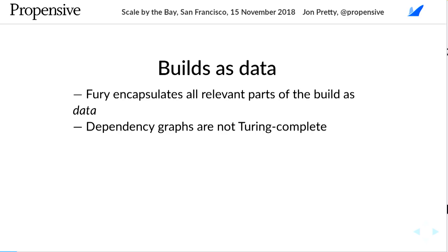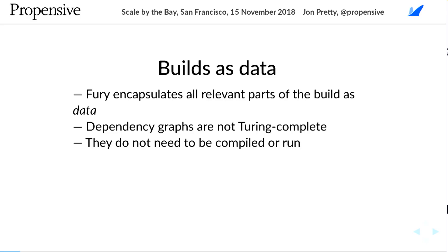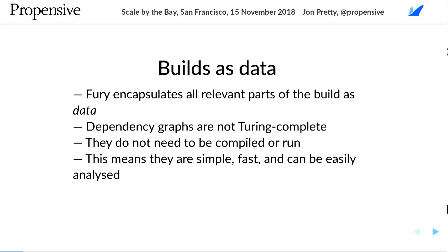The relationships between the different compile phases — the steps in compilation — are not Turing-complete. We can know them just by inspecting the data structure, without needing to compile anything or run code just to work out our dependency graph. We have the data there already, and what this gives us is simplicity. It's fast, we can analyze it, we can reason about it — and Fury is very fast and very responsive when you use it.